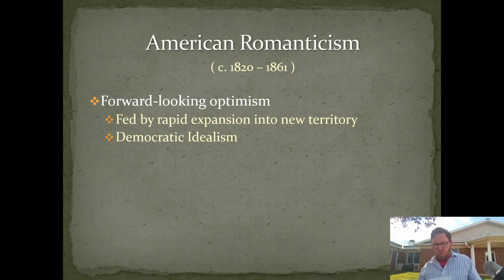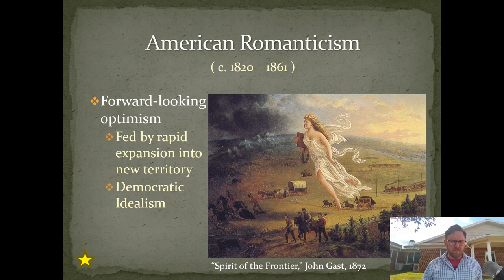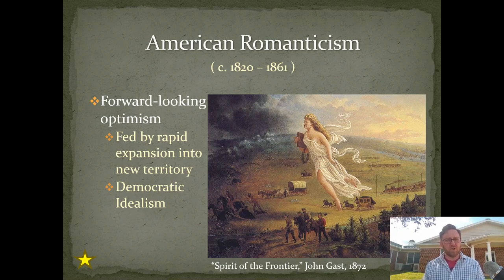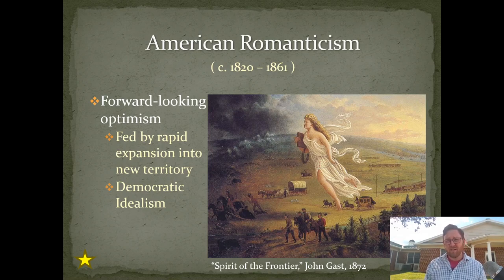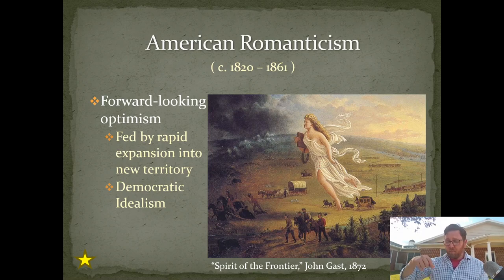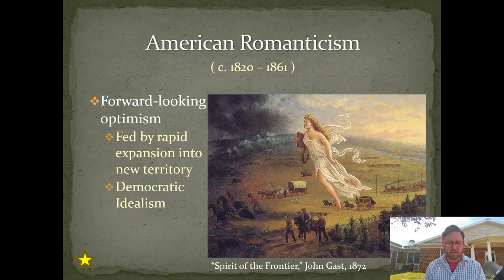That leads to a pretty important qualification on what I'm calling forward-looking optimism and rapid expansion into new territory: this is an era of great contradictions and tensions too. That optimism is not universally shared among people who rightly deserve to be called Americans. Of course, that expansion depends upon taking land by force from American Indians. We'll get to what black Americans are writing about and thinking about both at the end of this lecture and in a separate lecture on the slave narrative. That optimism is not universally shared — not even by all white authors.